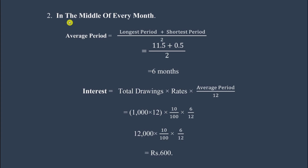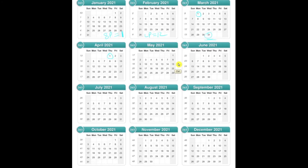Next scenario: middle of every month. As usual, average period = (Longest period + Shortest period) / 2. The first withdrawal is on 15th April. We calculate from 15th April to March 31st (year end). The last withdrawal is on 15th March. From 15th March to 31st March is the shortest period.